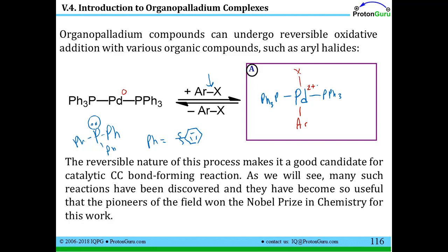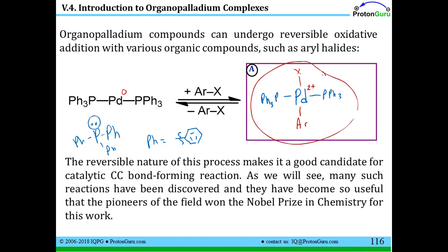It was oxidized upon addition, so it's an oxidative addition. Unlike the Grignard reagent case, this is a reversible process — you can take the palladium complex, release the aryl-X group, and remake the palladium(0) compound. The reversible nature of this process makes it a good candidate for catalytic C–C bond forming reactions. In fact, three people who did work in this palladium-catalyzed C–C bond coupling chemistry have won the Nobel Prize in chemistry recently.